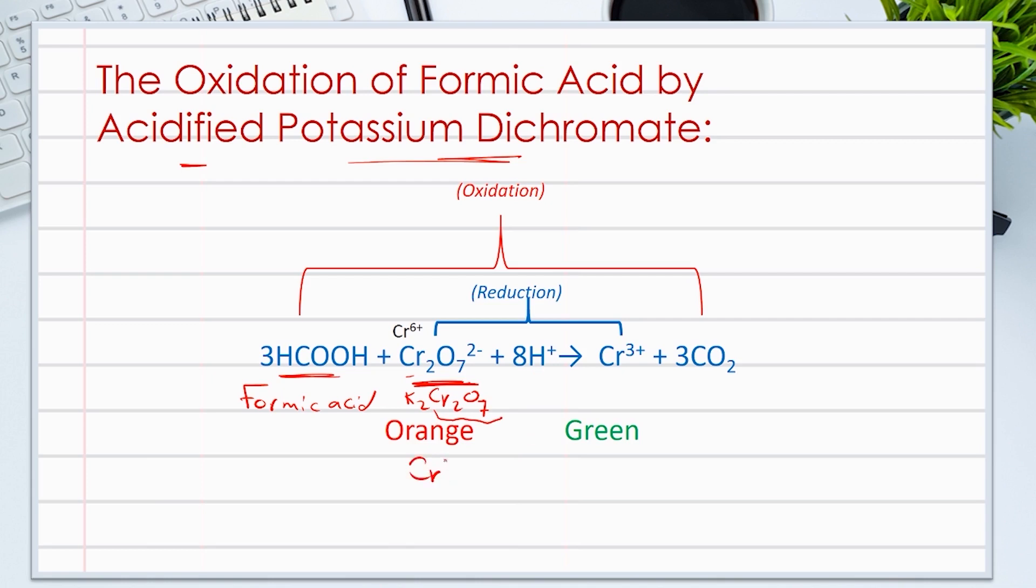Notice chromium oxidation number here is equal to 6, and 8 moles of hydrogen ions that comes from the 4 moles of the sulfuric acid H2SO4, to give Cr2(SO4)3, which is a chromium 3 ion, and 3 moles of carbon dioxide CO2.